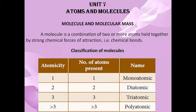A molecule is a combination of two or more atoms held together by strong chemical bonds. It is the smallest particle of a substance that contains the chemical and physical properties of the substance — a group of two or more atoms. For example, a hydrogen molecule consists of two atoms of hydrogen. So this is the definition of molecules.